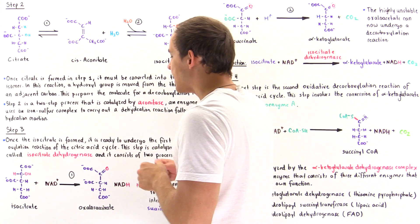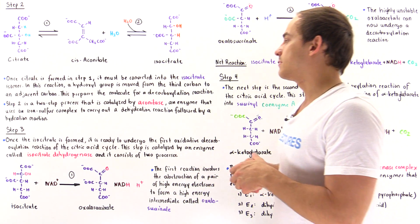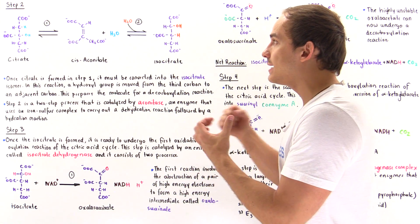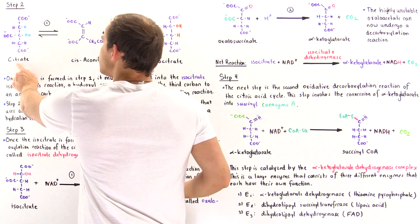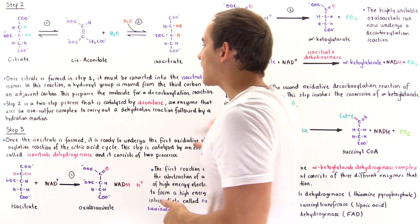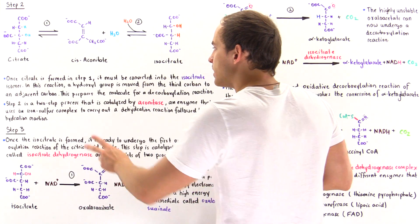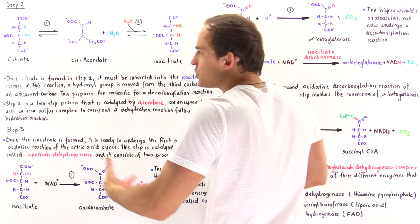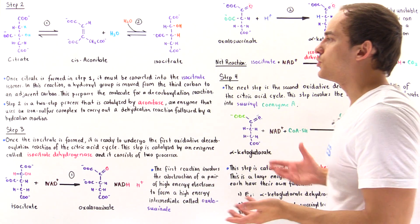Aconitase is an iron-sulfur enzyme containing a 4Fe-4S inorganic sulfide complex at its active site. This complex binds onto the carboxylate ion group of citrate, holding the substrate within the active site to allow catalysis. So step two — a dehydration followed by a hydration — is catalyzed by aconitase, an iron-sulfur protein.